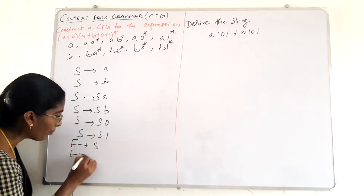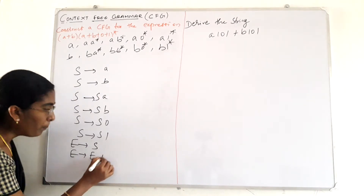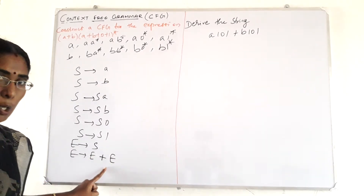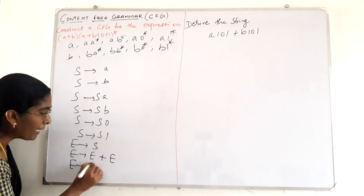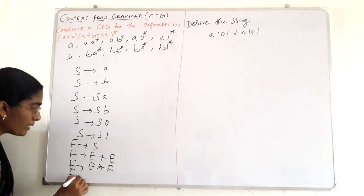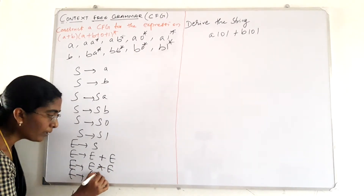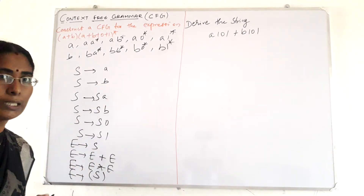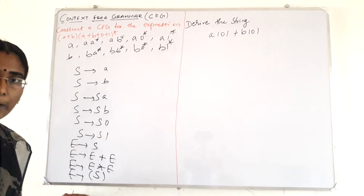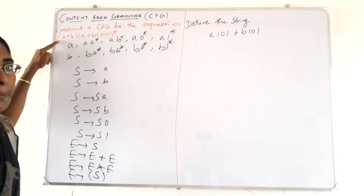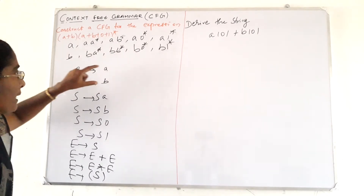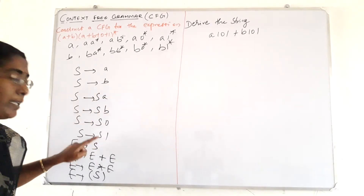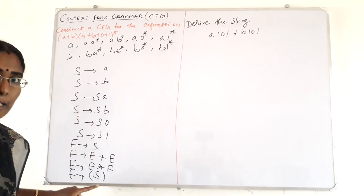An expression can also be written as one expression plus another: E implies E plus E. Next, using the star operator: E implies E star E. And finally, using brackets: E implies open bracket S close bracket. These are the productions using operators.